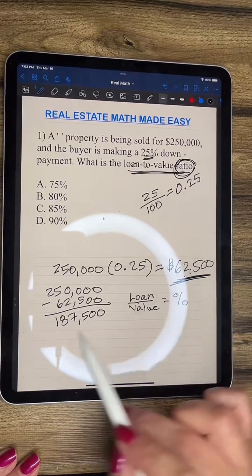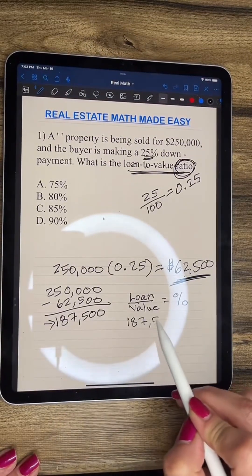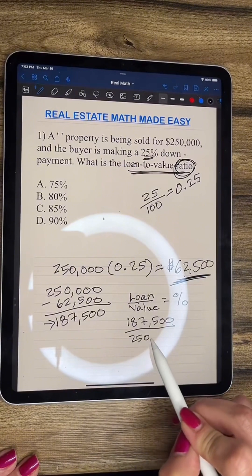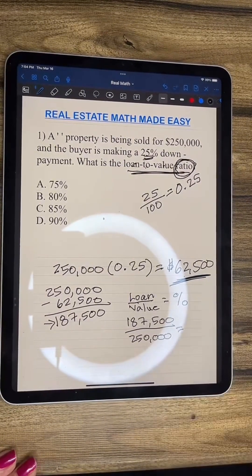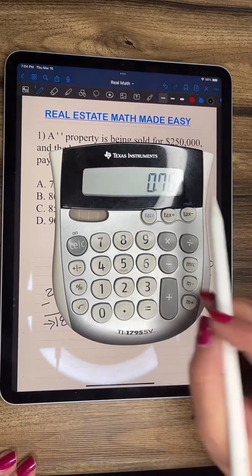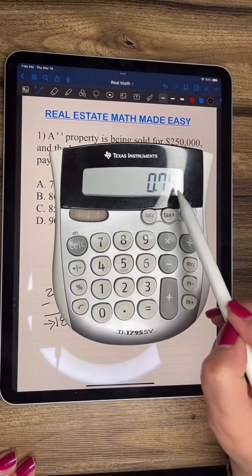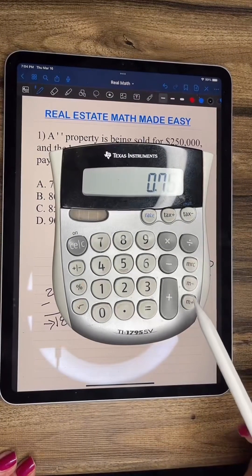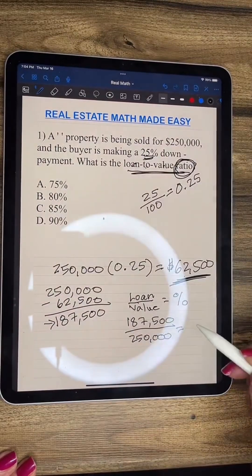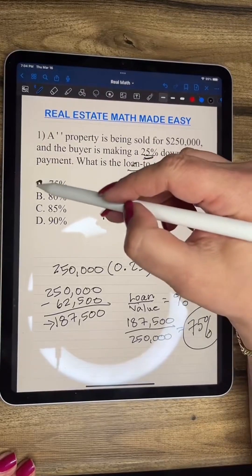So now what we're going to do is we're going to get the loan value, which is this now, $187,500 and divide it by the value, which is $250,000. And when you divide those two, you get 0.75. So remember, you have to move it twice, so it becomes a percent. You have to move the decimal twice or multiply it by 100. So that's going to equal 75%. So my answer has to be A.